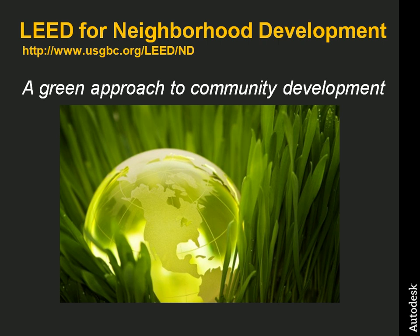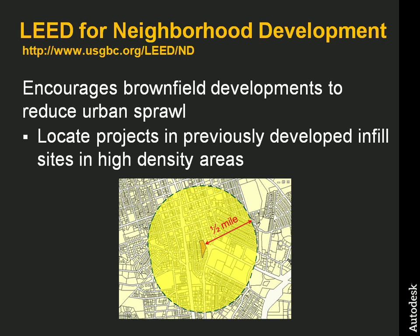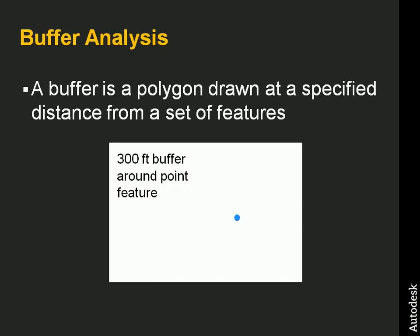Think of LEED as a way of promoting a green approach to community development. From a civil engineering perspective, LEED for Neighborhood Development is an opportunity to bring together engineering design and GIS analysis methods to meet a set of document requirements for achieving LEED certification. For example, the Smart Location and Linkage category encourages brownfield developments to reduce urban sprawl. Maximum credit can be attained if the project is located in a previously developed infill site that is also in a high-density area. In this case, high density is a function of the number of street intersections within a half-mile of the project boundary, and this is where geospatial buffers come into play.